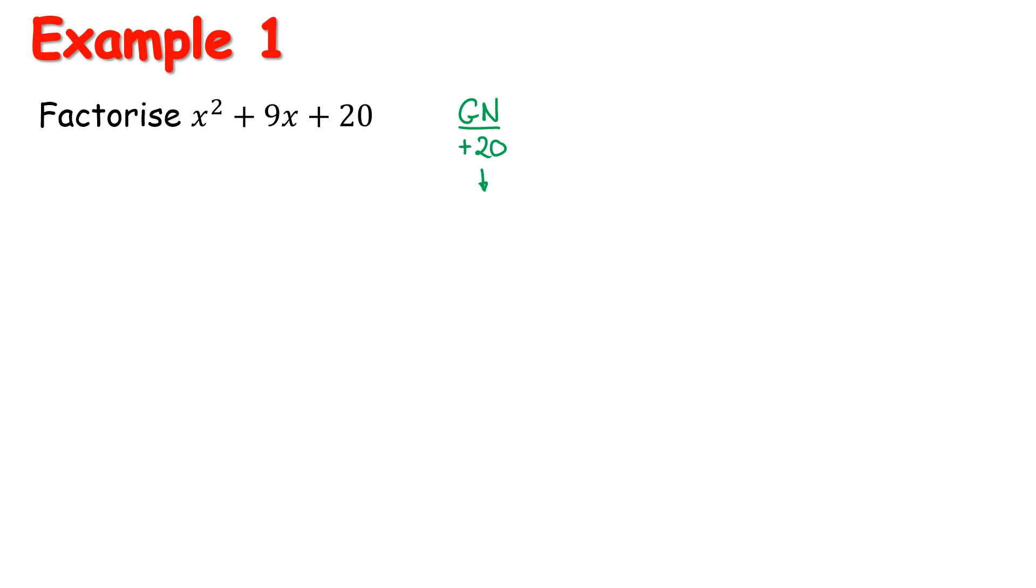So we're going to work with either 20 and 1 and that doesn't work, or 10 and 2, that doesn't work, 5 and 4 and that does work. Now usually we would go and start rewriting it, but actually once you've found the right pair of factors, all you need to do is simply open two brackets.